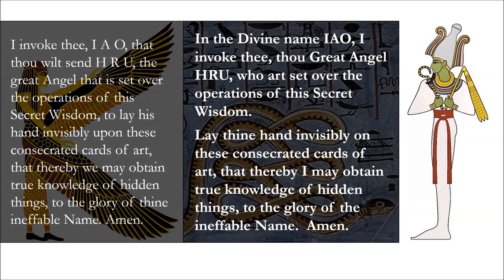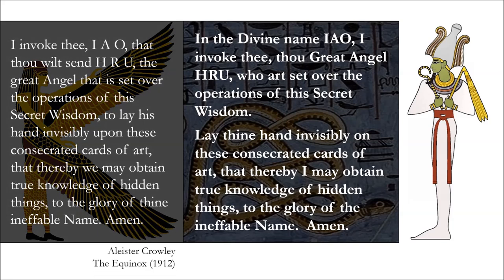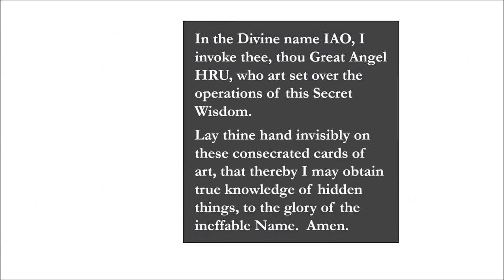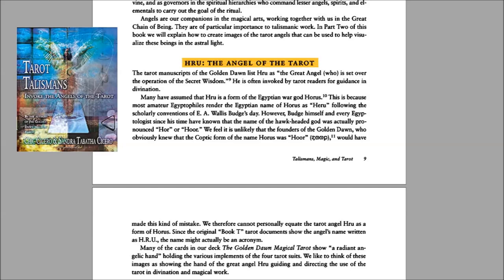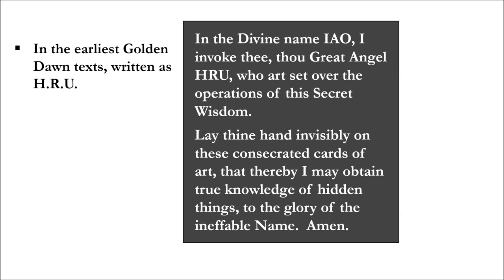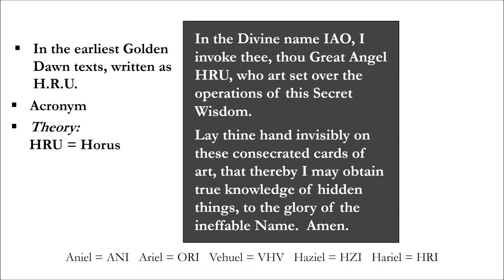Aleister Crowley offers slightly different wording for the invocation of Haru — you'll see it on screen for comparison. Of interest is who or what is HRU, pronounced Haru. Chic and Tabitha Cicero tell us that Haru is the great angel of the tarot, invoked by tarot readers for divinatory guidance — Tarot Talismans is a fantastic book for deeper insight. In early Golden Dawn texts the name is written as if indicative of an acronym. Another popular theory is that Haru is the three-lettered name for Horus, the way angel names are written with three letters — for example Anil (A-N-I), Ariel (O-R-I), Vehuel (V-H-V), Haziel (H-Z-I), or Hariel (H-R-I). Contemporary Golden Dawn thought leaders reject the theory that HRU is Horus, however.